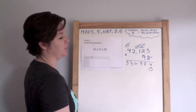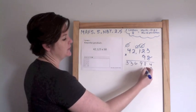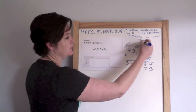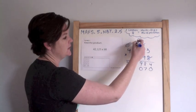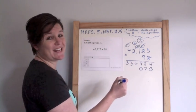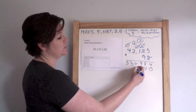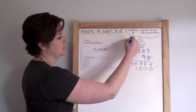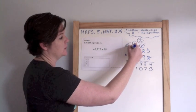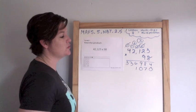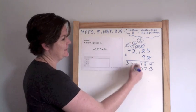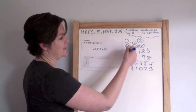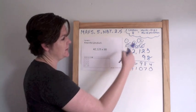Okay. 0 to hold the place. 9 times 3 is 27. 9 times 2 is 18, plus 2 is 20. 9 times 1 is 9, plus 2 is 11. This goes here. 9 times 2 is 18, plus 1 is 19. And 9 times 4 is 36, plus 1 is 37.